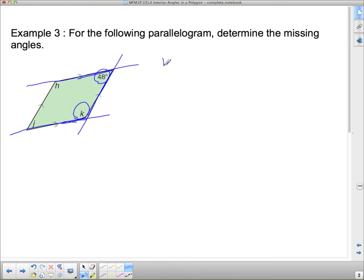That's what the C pattern tells us. So to find K, I can use 180 degrees minus 48. Can you do that in your head? 180 degrees minus 40 would be 140. Then I have to take away 8 again, so that's 132. So K is 132 degrees.